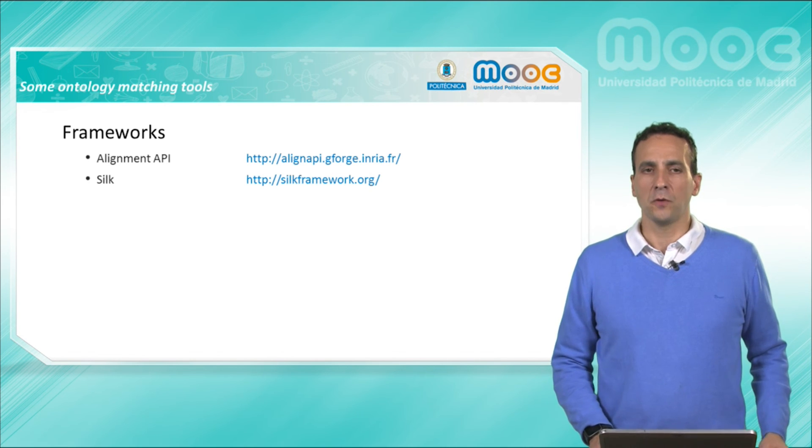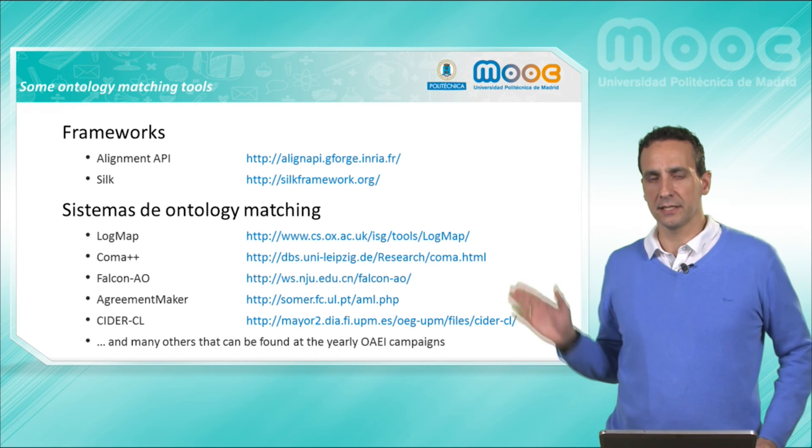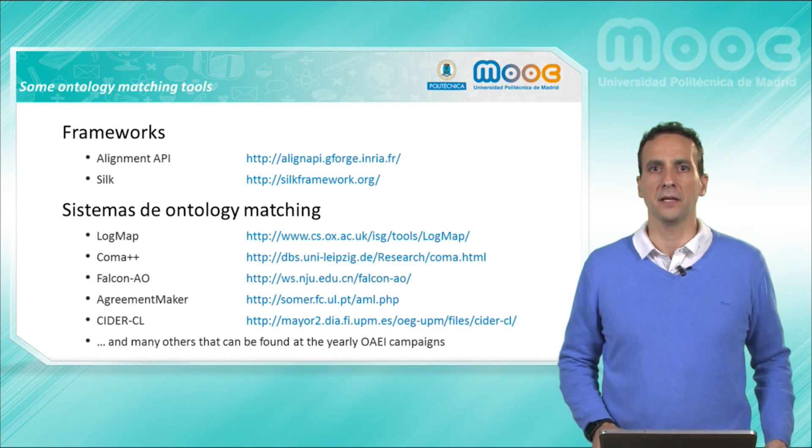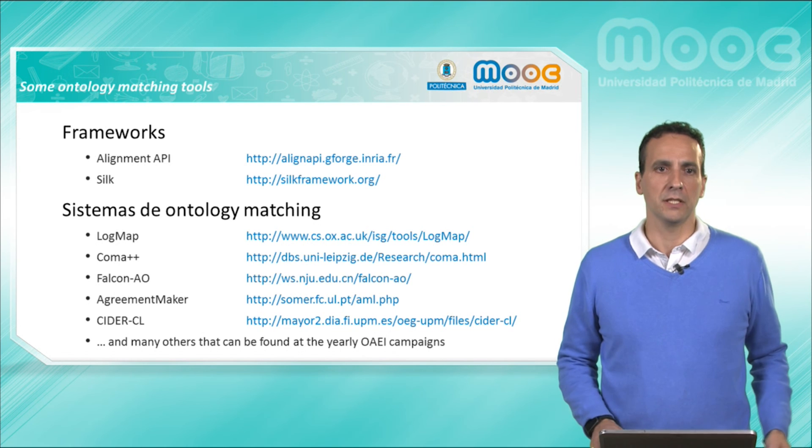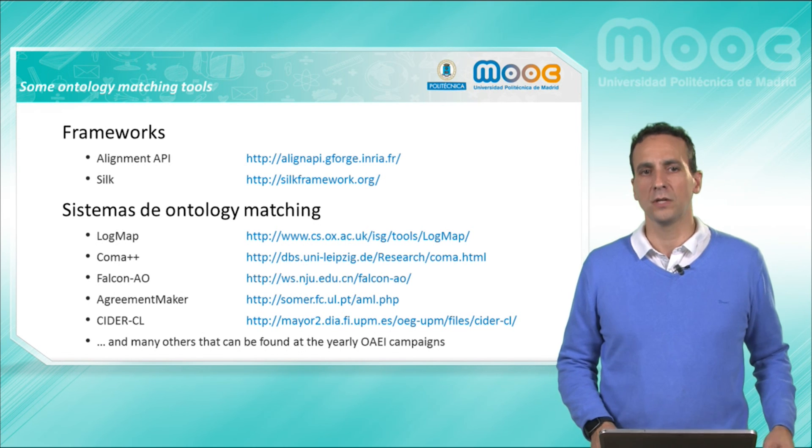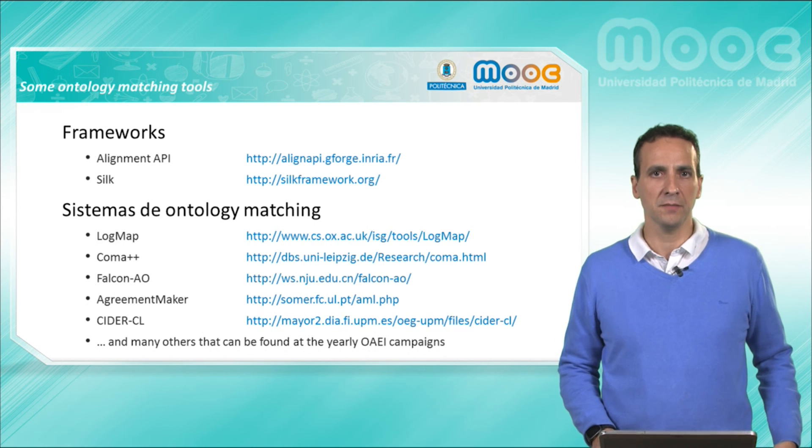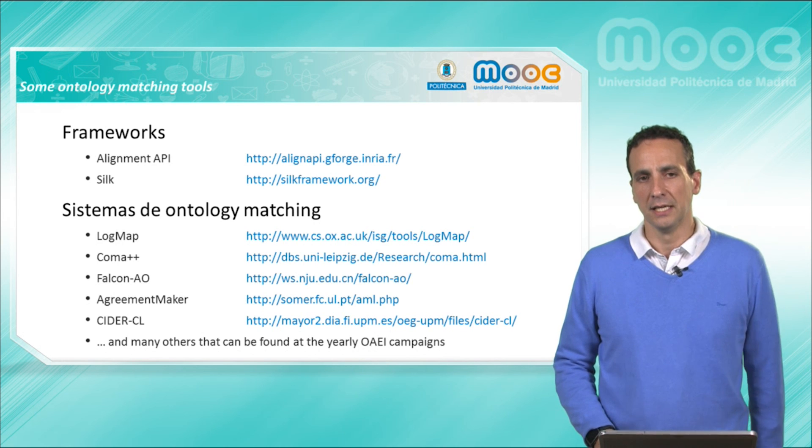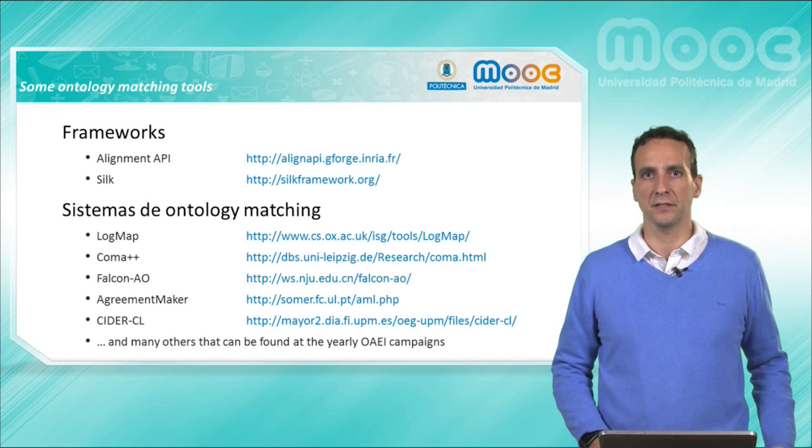Besides these frameworks, there already exist many ontology matching tools, such as the list that I write there, generally with their web address. So if you want to take a closer look at them, just go to these addresses and inspect them to see if they fit your purposes. And of course, there are many other tools, such as the ones that participate in the OAEI campaigns regularly.